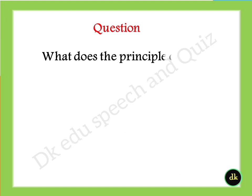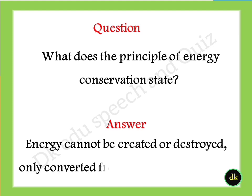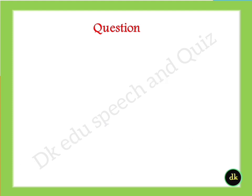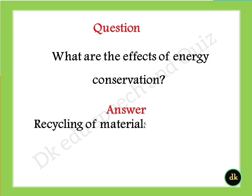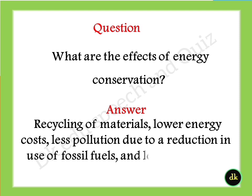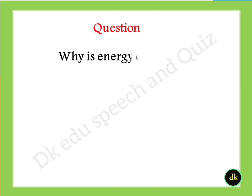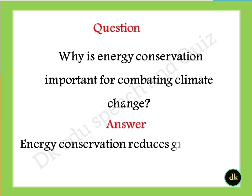What does the principle of energy conservation state? Answer: energy cannot be created or destroyed, only converted from one form to another. What are the effects of energy conservation? Answer: recycling of materials, lower energy costs, less pollution due to a reduction in use of fossil fuels, and less harm to the environment. Why is energy conservation important for combating climate change? Answer: energy conservation reduces greenhouse gas emissions.